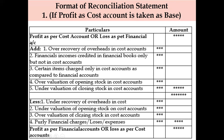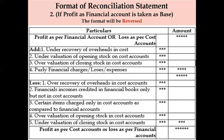The second format is when profit as per financial accounts is taken as base — the format will be reversed. Whatever items were deducted in the first format will be added here, and whatever was added will be deducted. When profit as per financial accounts is taken as base, the answer will be profit as per cost accounts. You should be ready to identify which items are to be added and which are to be deducted in any given problem.